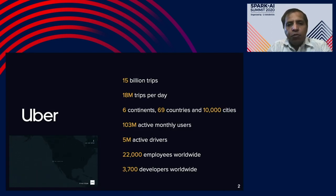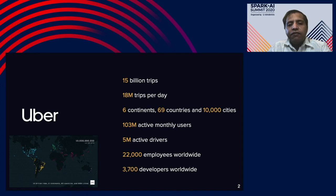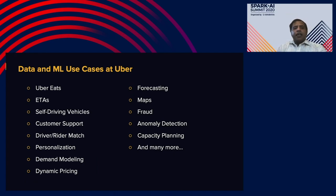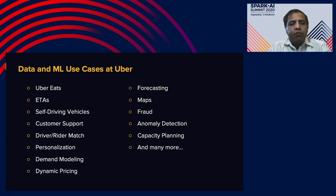For Uber, we are a global company. We completed our 15 billion trips. We have 18 million trips per day. We are in six continents, 69 countries and 10,000 cities. We have 103 million active monthly users and 5 million active drivers. Data and ML is the backbone for Uber to power many use cases including Uber Eats, ETA, self-driving vehicles, forecasting, and maps.